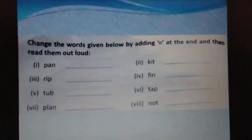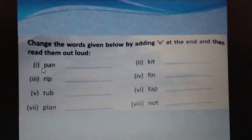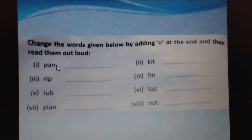Students, here are some words. We will add the letter E at the end of these words, and then read them. First word is P-A-N — 'pan.' When we add E, the word becomes 'pane.' Pane means a window pane — the glass of a window.